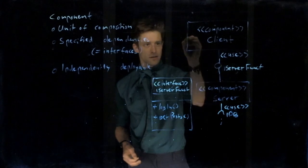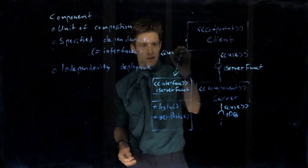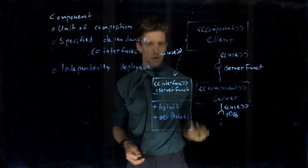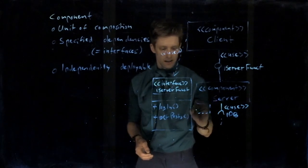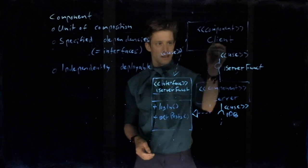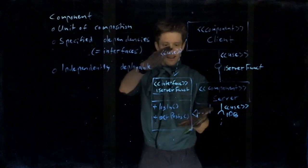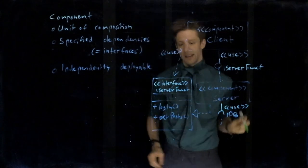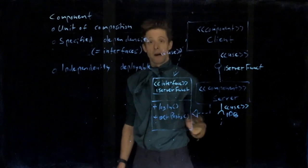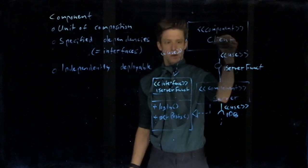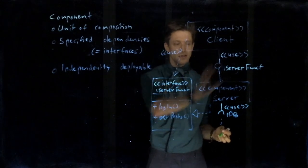And then instead of this notation, what we can do is like this. So we have an arrow, a dashed arrow with an open arrowhead. And we have a dashed arrow with an empty closed arrowhead. And this means this one is using this interface. This one is providing it. We're implementing it. So this is the long, the explicit version of the small thing here. And the advantage is, of course, we are seeing exactly what is in that interface. What kind of methods do we need to implement on the server? And what kind of methods is the client trying to call?